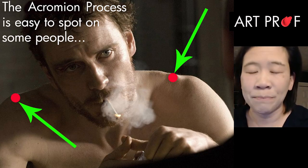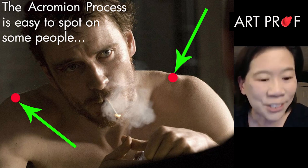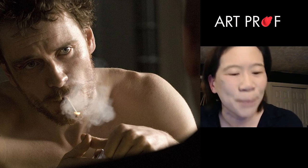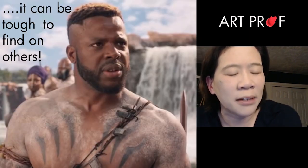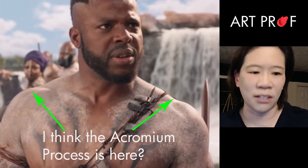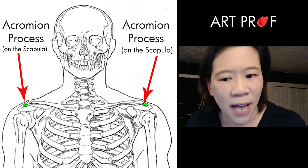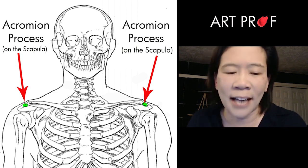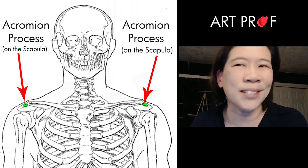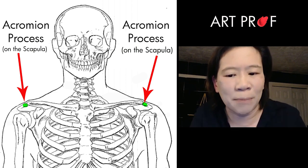The coracoid process — on some people it's really, really visible. It looks like mountain peaks or something. Michael just looked so good; his coracoid process on the right-hand side has its own shadow, which almost never happens. On other people you just go, okay, I think it's here — it's at the end of the clavicle. People sometimes think the coracoid process is part of the clavicle, but it's not. It's actually part of the scapula — it's like a little tip that curls forward from the scapula.